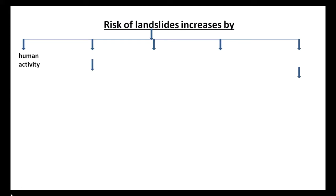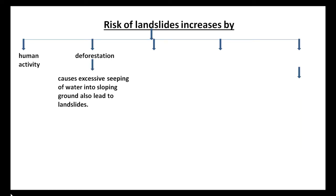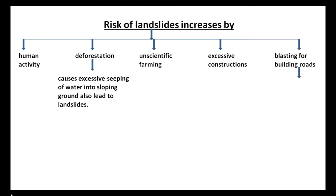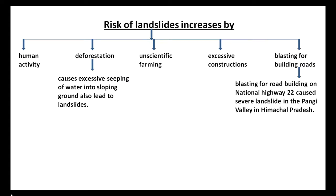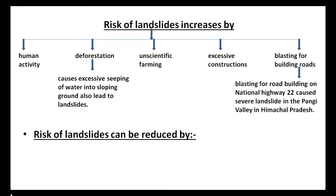The risk of landslides increases due to human activities. Deforestation causes excessive seeping of water into sloping ground, which also leads to landslides. Unscientific farming, excessive construction, and blasting for building roads also increase the risk. For example, blasting for road building on National Highway 22 caused a severe landslide in the Panji Valley in Himachal Pradesh.